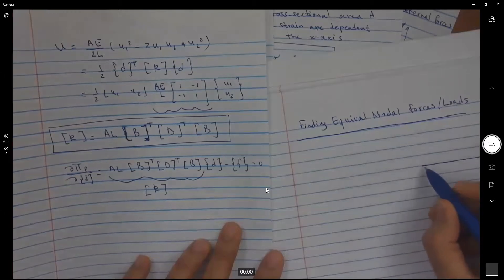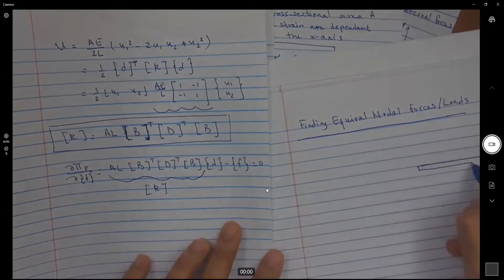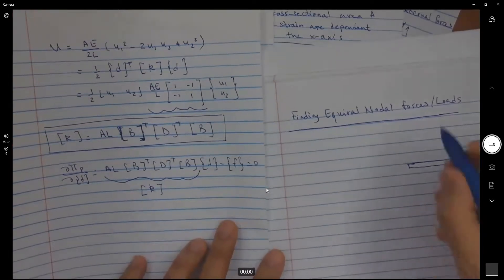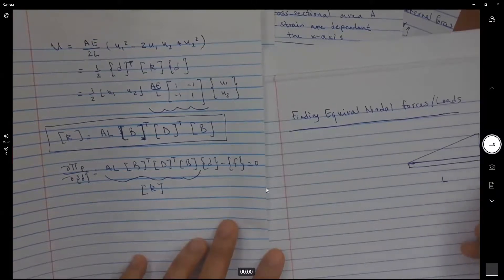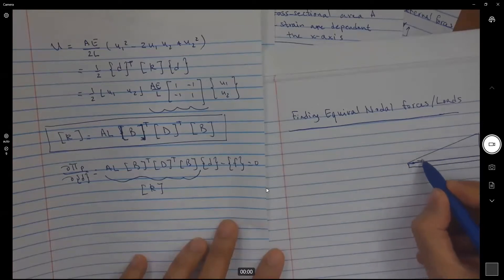In this case here, if I have a bar element on this bar element that has a length L, I have a distributed surface load. Remember, everything has to be acting along the x-axis. So even though I am showing this triangular distribution, the force is going in the x direction.